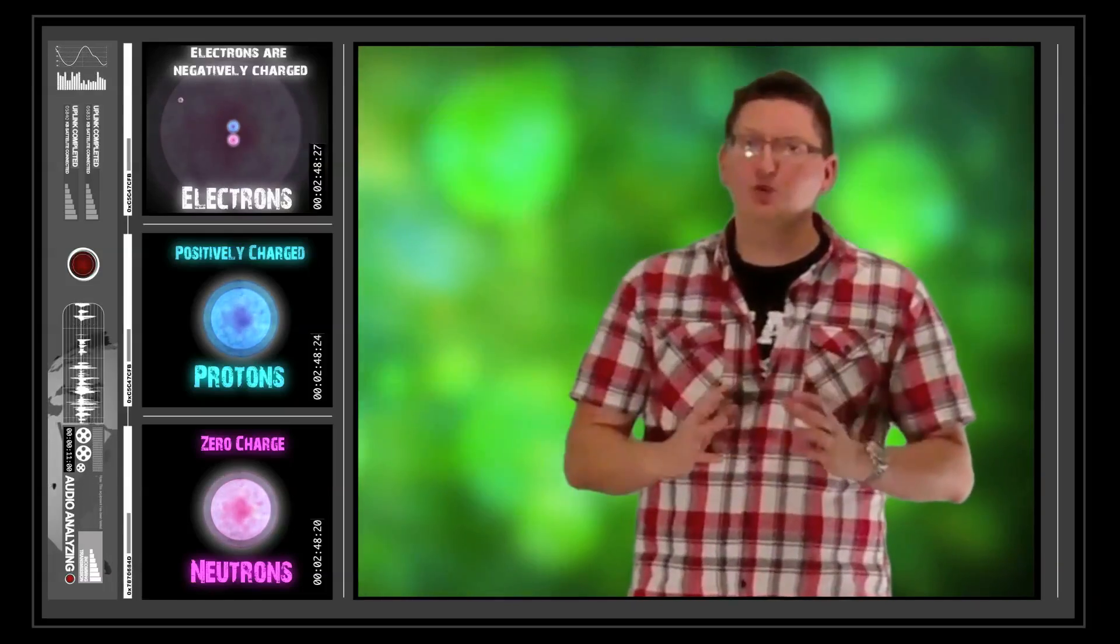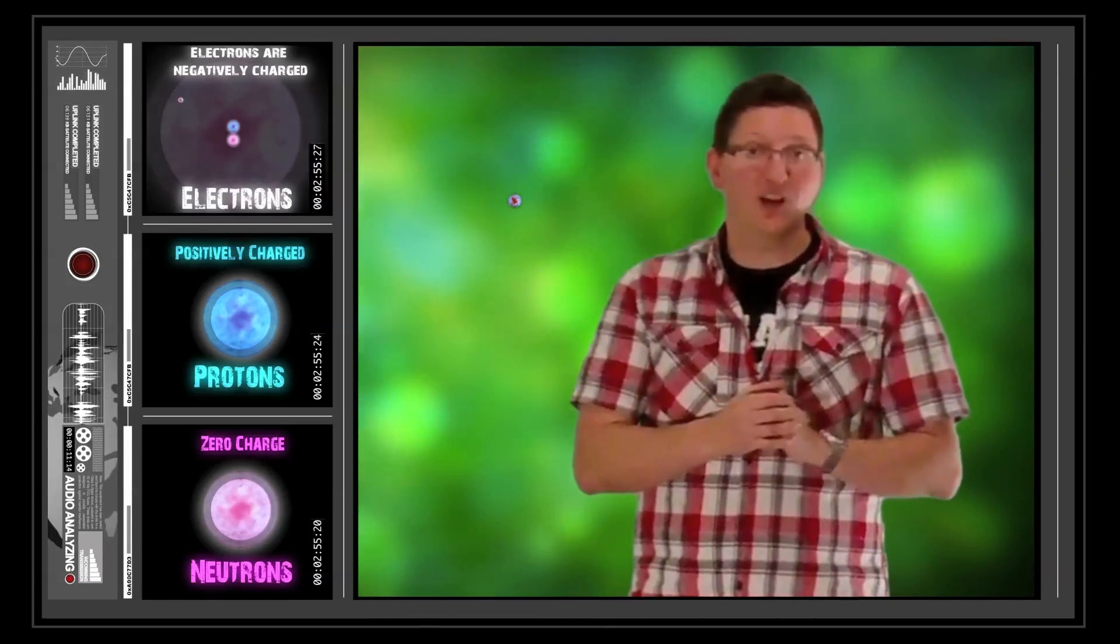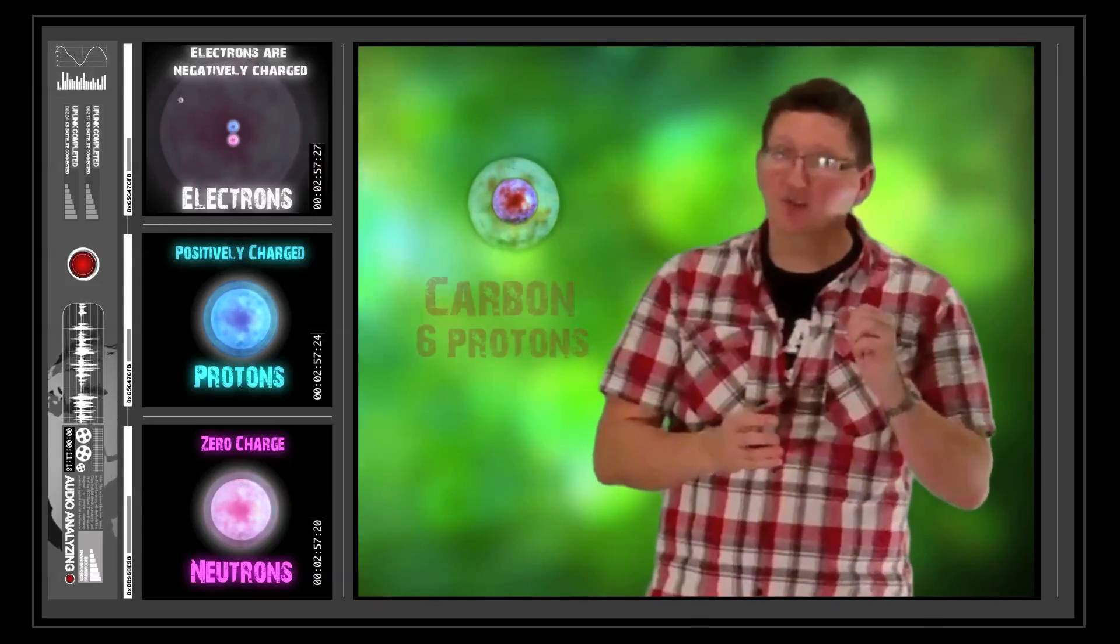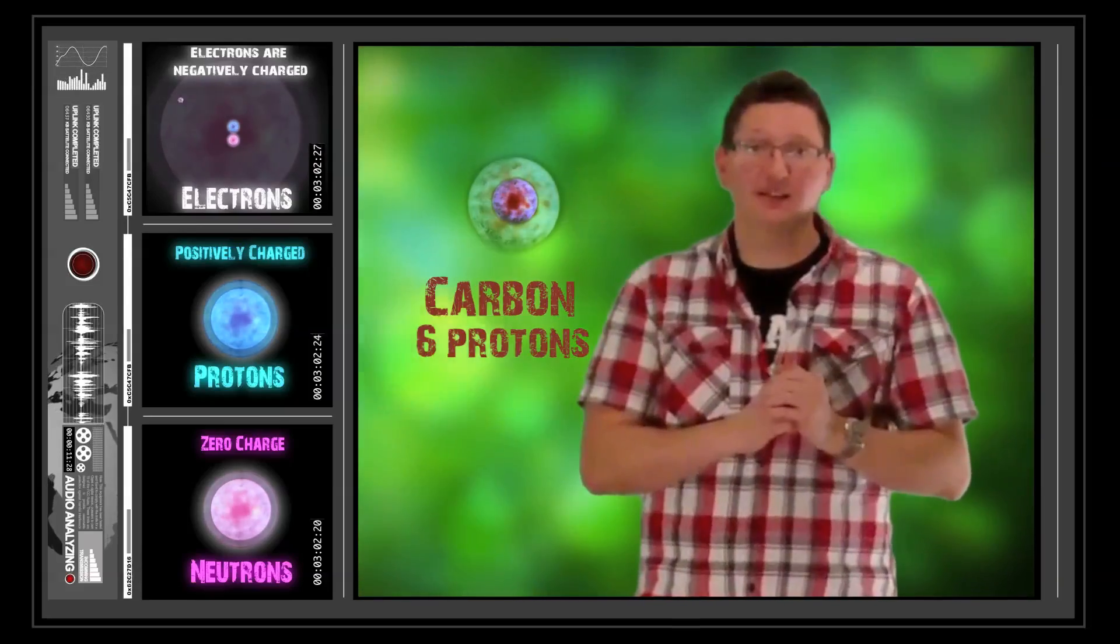Now the number of neutrons, the neutral parts of the nucleus, can vary. So for example, if we look at carbon, we'll go back to carbon as an example. Carbon's got 6 protons, so it is carbon. That's what defines it as carbon.